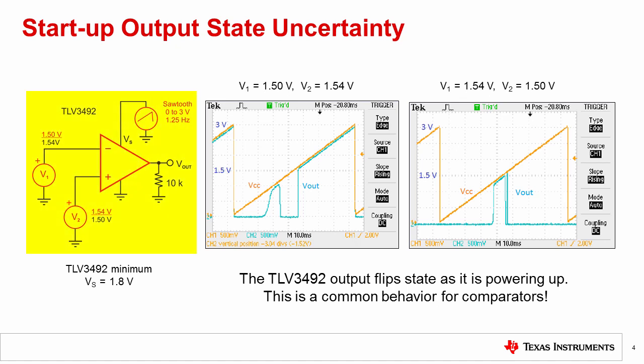This behavior is illustrated in the circuit shown here using the TLV3492. In this example, the supply voltage is slowly ramped up using a sawtooth generator. Two different sets of input conditions are shown in red and black.